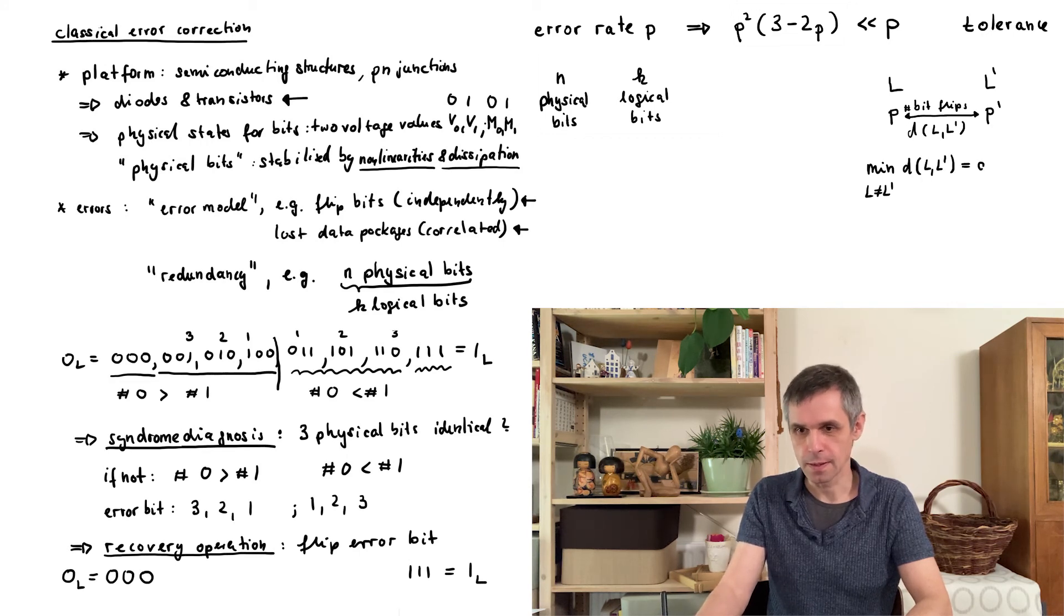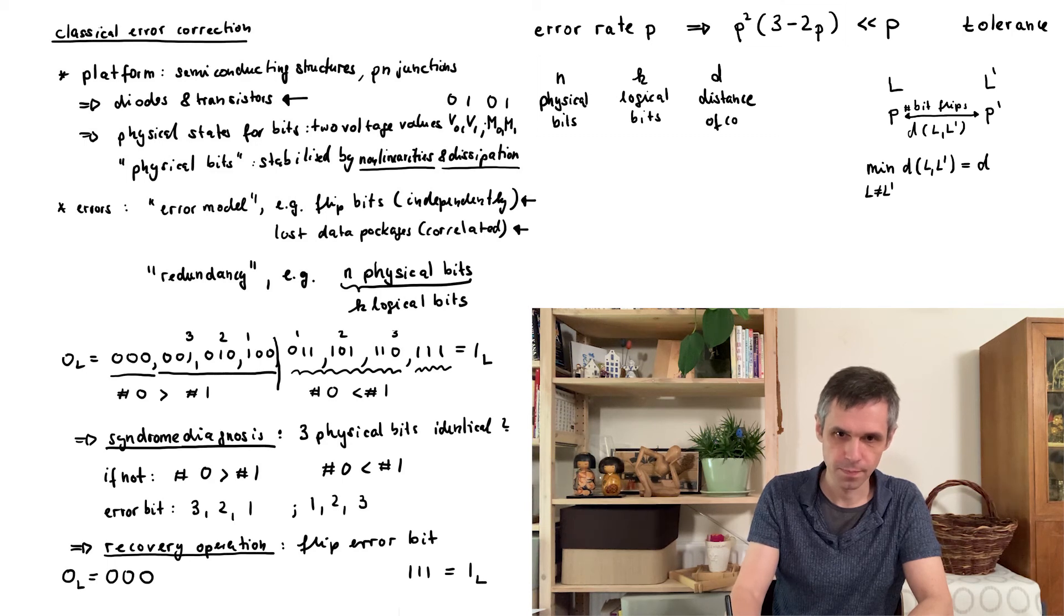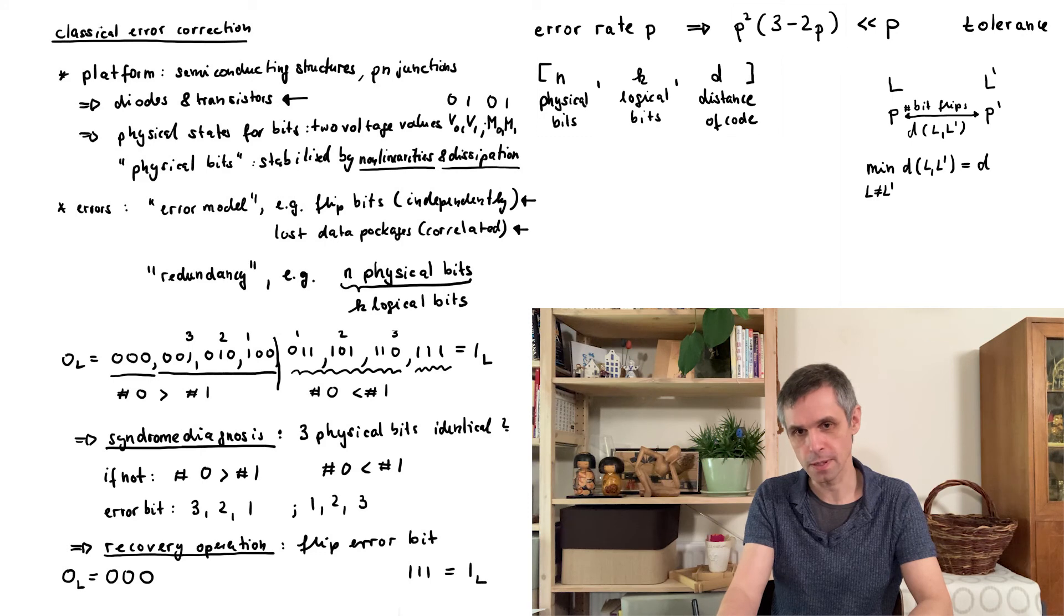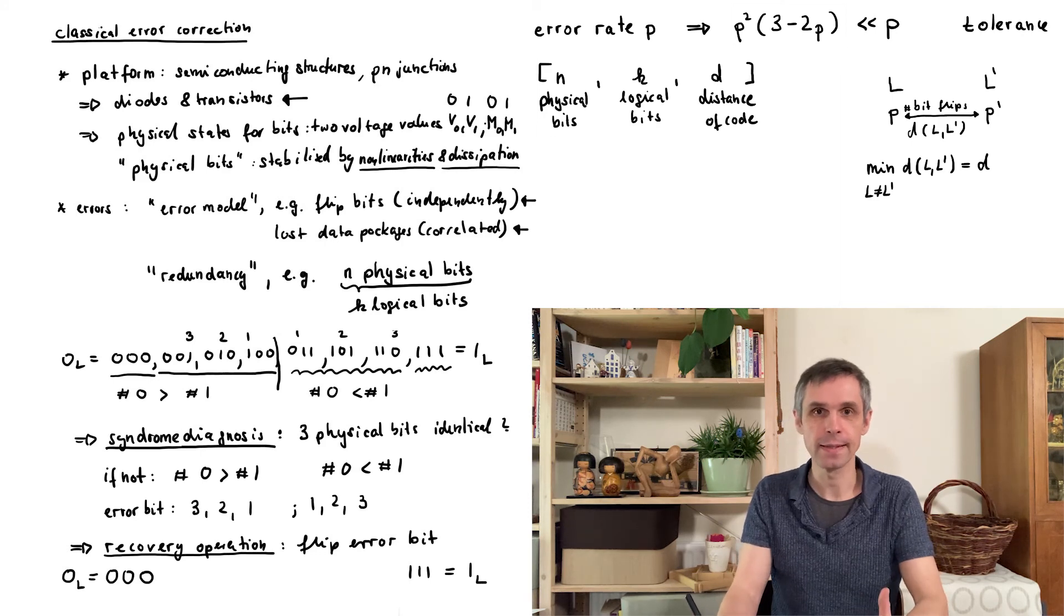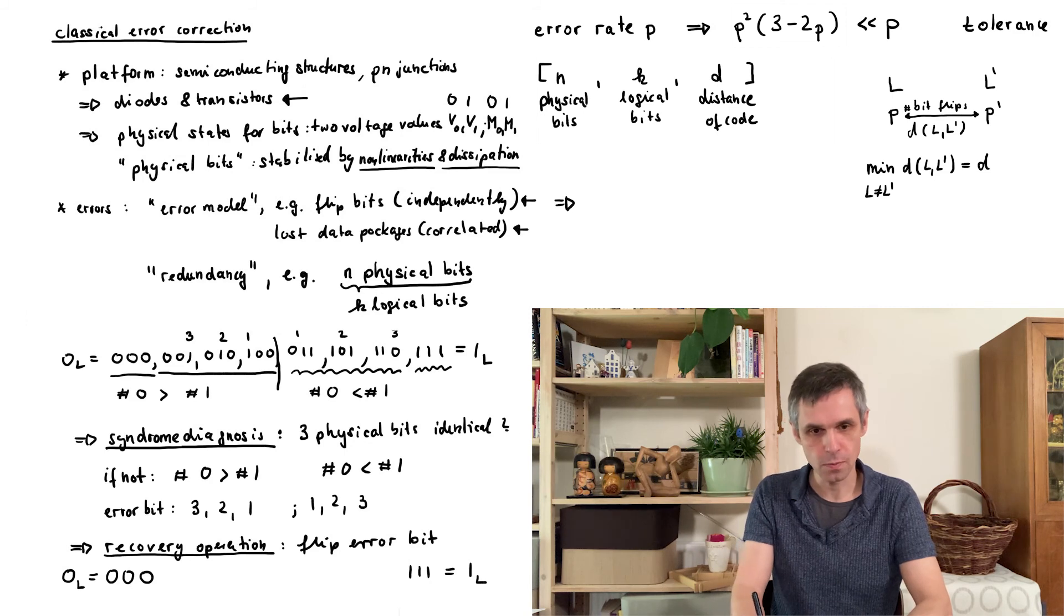So these are three important numbers that characterize any code. And we group them into a triple such as this. In here, k and n tell us how efficient this is in terms of physical overhead, and d tells us how many errors we can correct. Because using this code we can then correct a certain number of errors, so unintended flips of these physical bits.